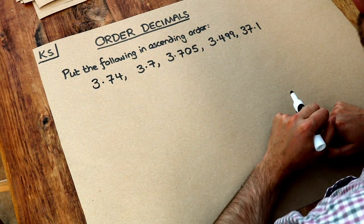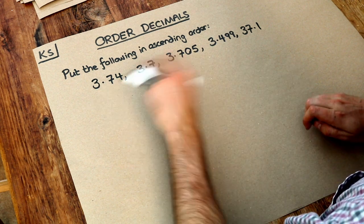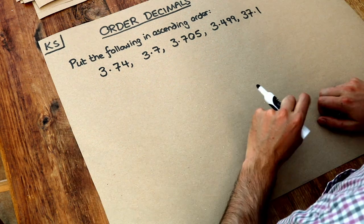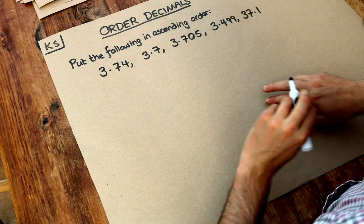We saw that in the previous video on knowing the place value of decimal numbers. We use exactly the same strategy as if we were ordering whole numbers except we need to write the numbers in such a way that we can easily see the place value.